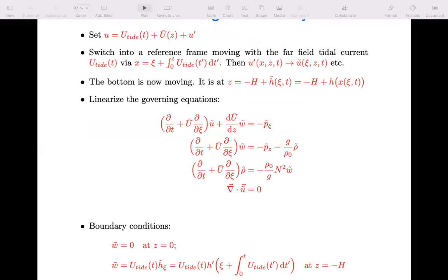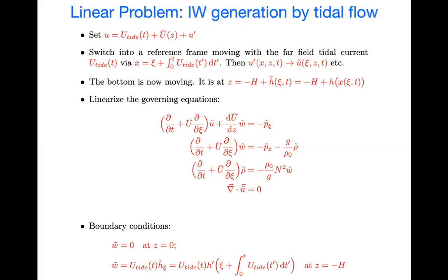The horizontal current U is separated into three parts: the tidal current, which is a function of time; the background surface current U-bar of z; and U-prime, the perturbation associated with the waves. We switch into a reference frame moving with the far-field tidal current — so U-tide — getting a new horizontal variable psi, and the tilded variables are functions of psi, z, and t instead of x, z, and t. In this reference frame the bottom is moving, so it's z equals minus H plus H-tilde of psi and t. You linearize the governing equations, and the tidal current disappears except in the boundary condition.